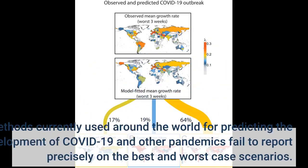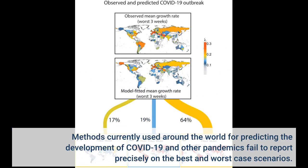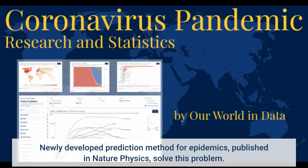Methods currently used around the world for predicting the development of COVID-19 and other pandemics fail to report precisely on the best-and-worst-case scenarios. A newly developed prediction method for epidemics, published in Nature Physics, solves this problem.